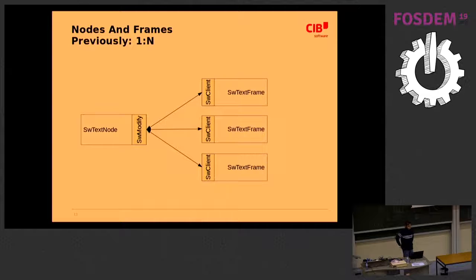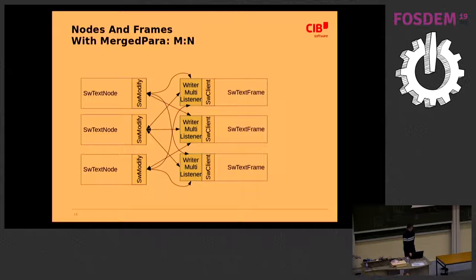The other invariant is that previously we had a one-to-one mapping between nodes and frames. One text node could have multiple frames. For example, if your paragraph is so large that it's split across multiple pages, we'll have one text frame per page. There's this listener mechanism, SW modify SW client, that is used all over Writer. This mechanism has a limitation that an SW client can only listen at one SW modify. With the merge paragraphs, we have this additional writer multi-listener in the text frame. This allows us to connect one text frame with multiple text nodes. It will get notifications on every editing operation on every connected text node and can update itself.